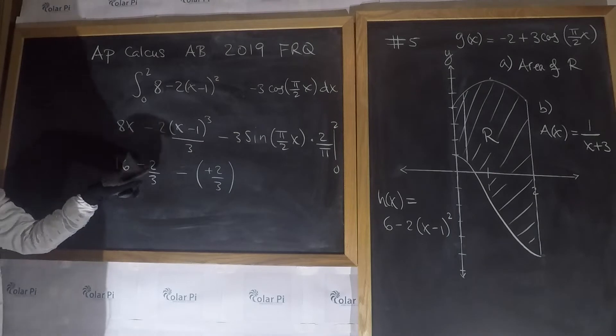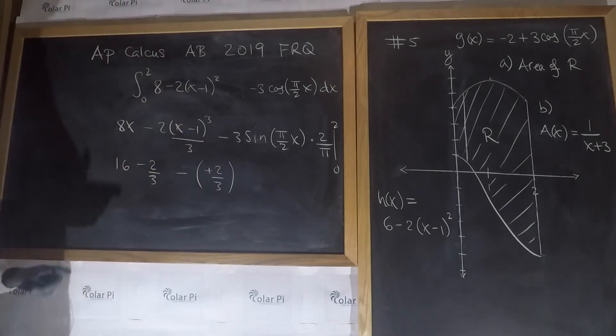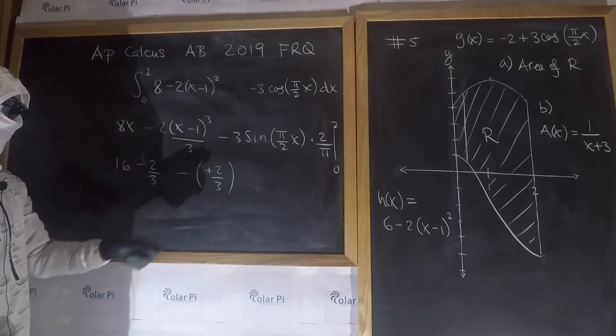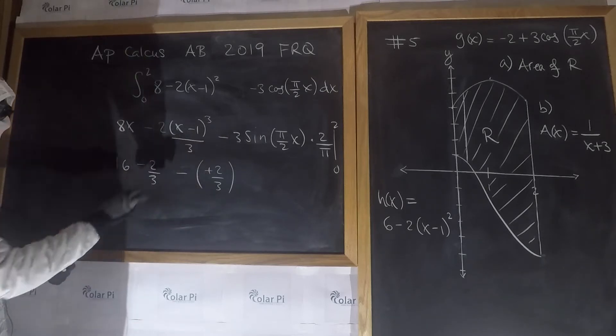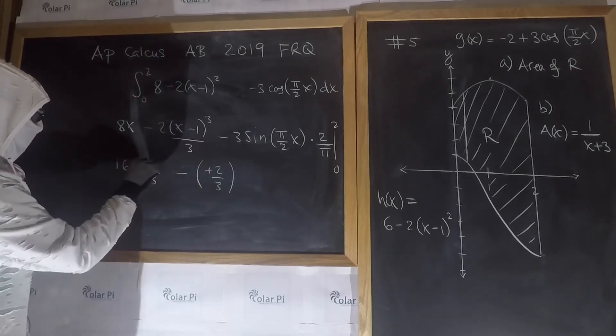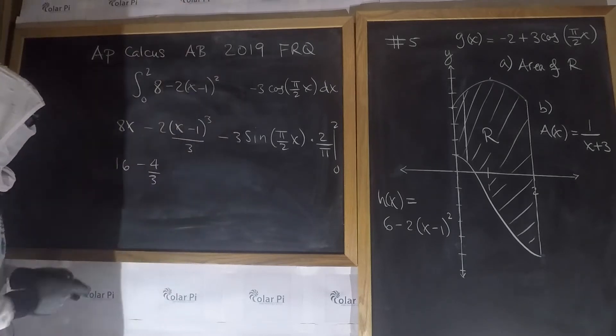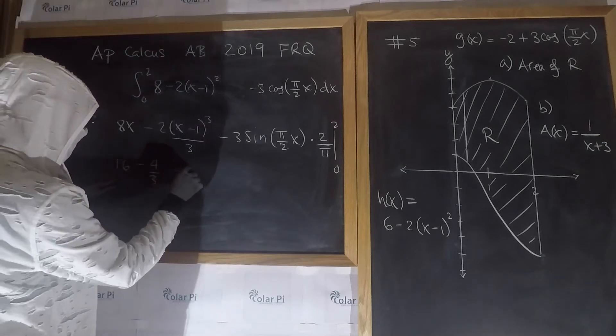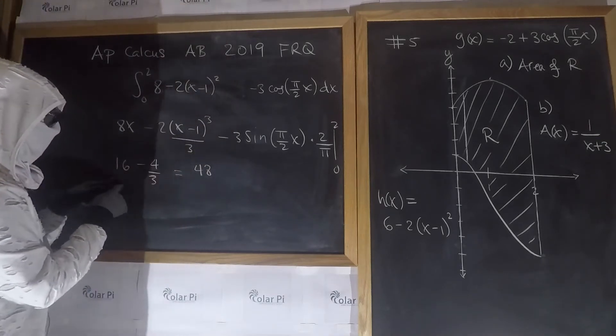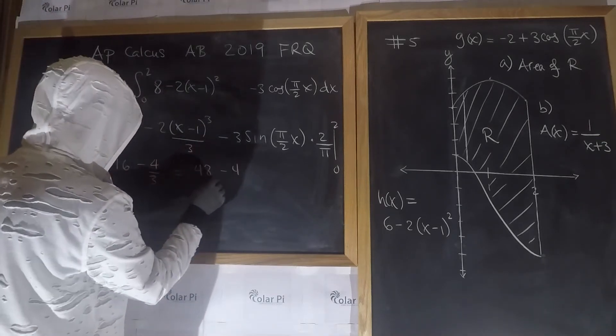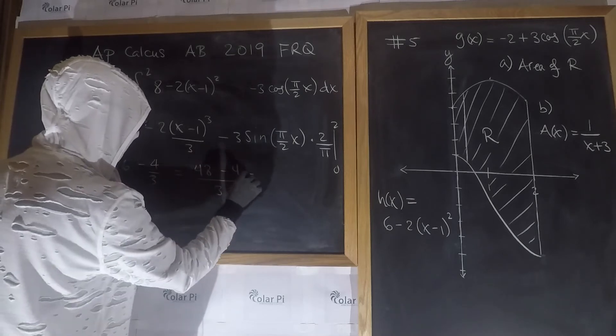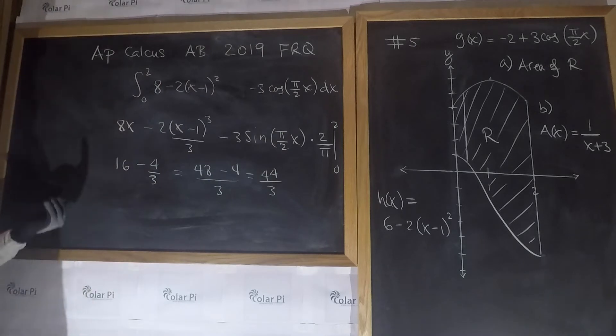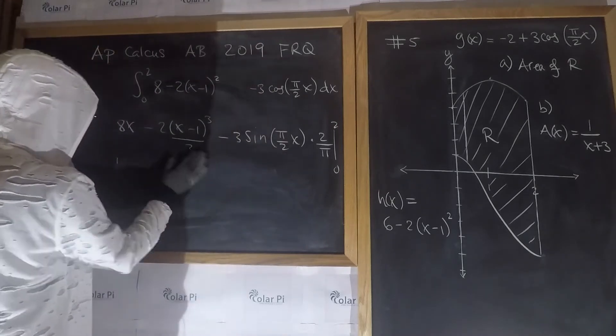So this is it. I have minus 2 thirds minus 2 thirds, so that's minus 4 thirds. And so I can get rid of this. If I get common denominators, that's 48 thirds minus 4 thirds, so 48 minus 4 over 3, which is 44 over 3. So that's it for A.